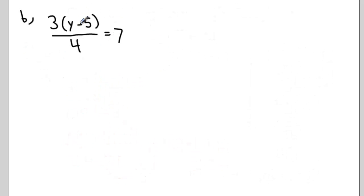Let's try a more complicated example. Now I have 3 times y minus 5 in brackets all over 4 equals 7.